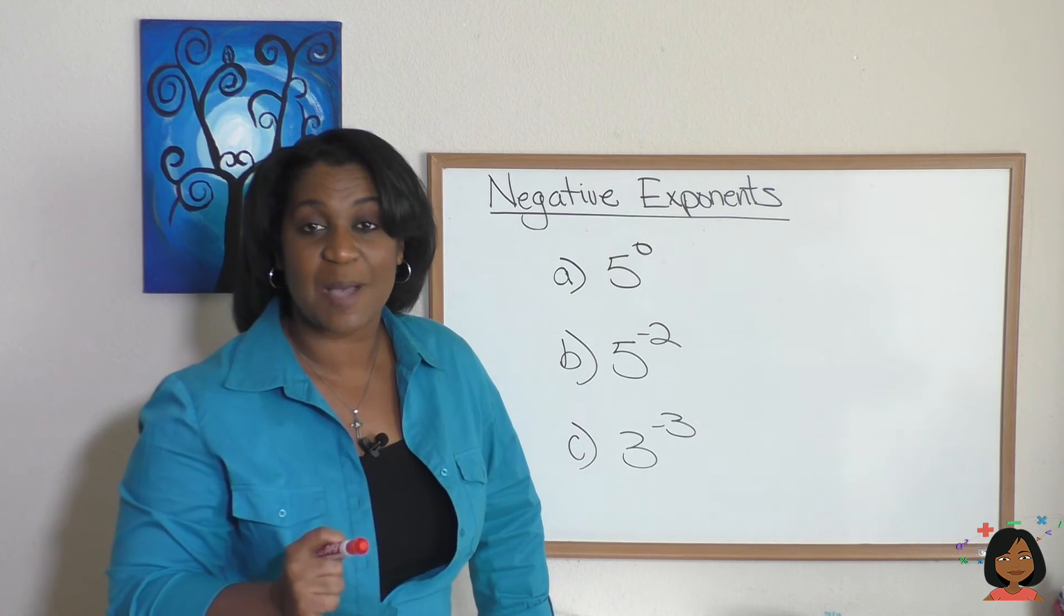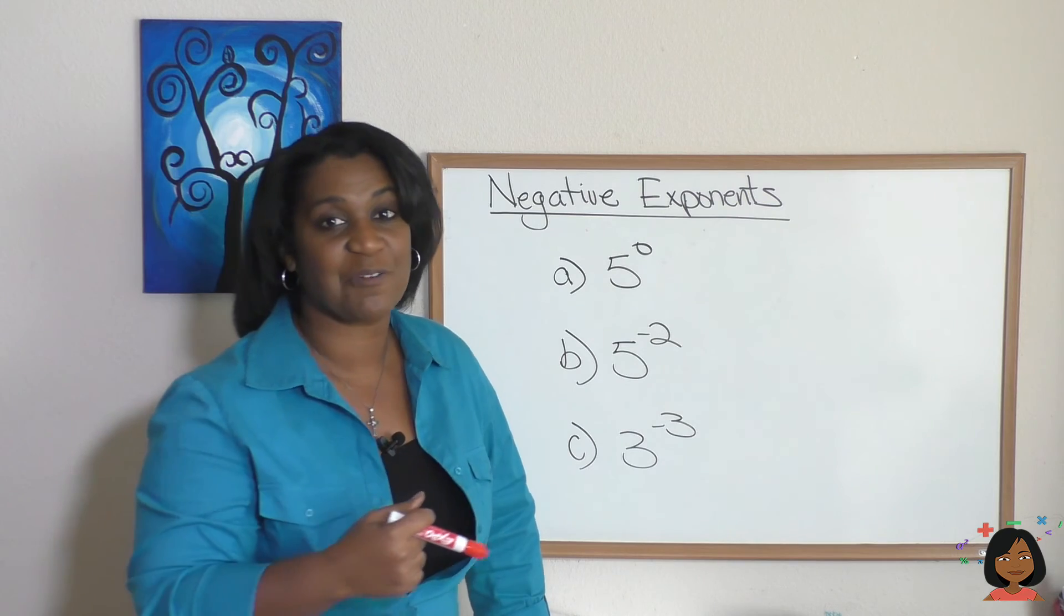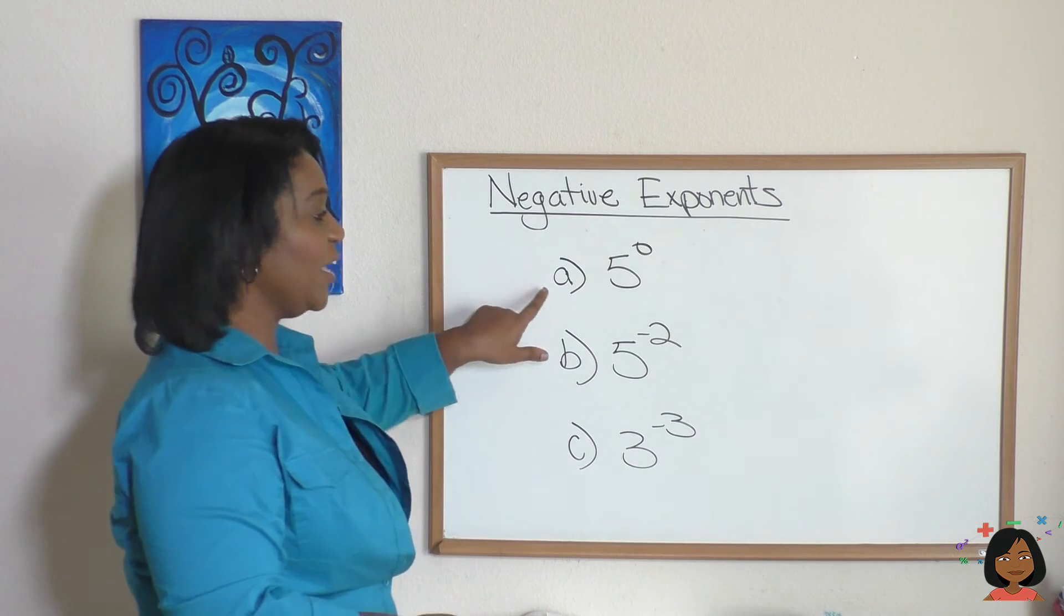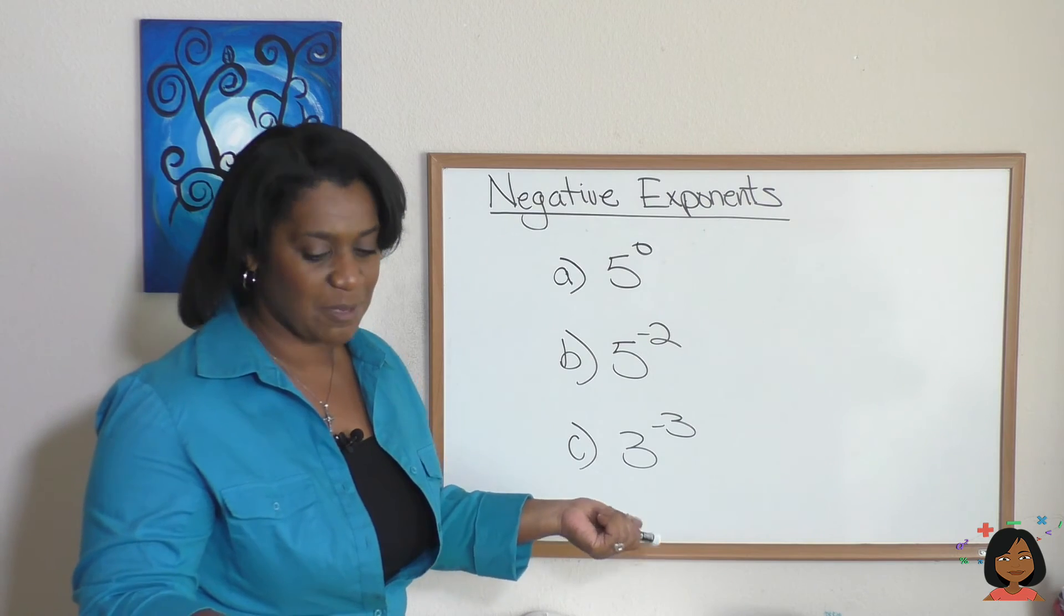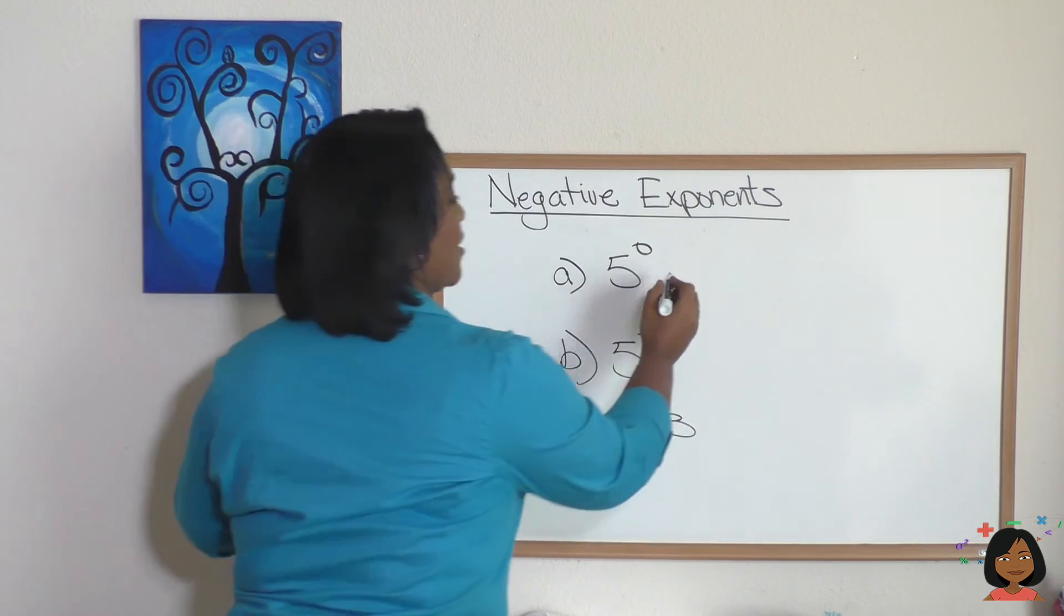Let's try three practice examples to make sure you can apply this on your own. Here's the first one. 5 to the 0 power. Anything to the 0 power is going to be what? It's going to be the number 1. Nice.